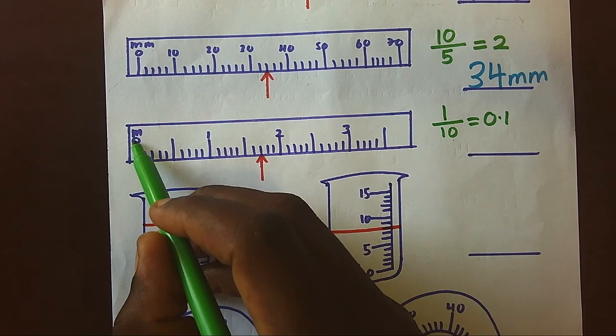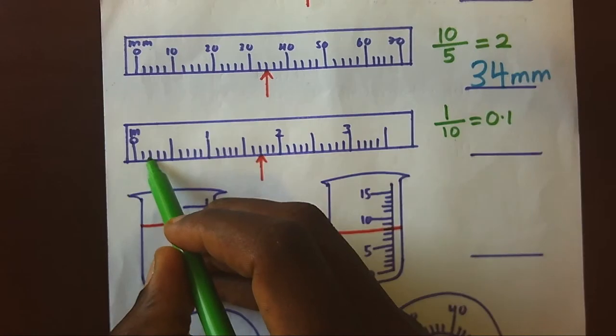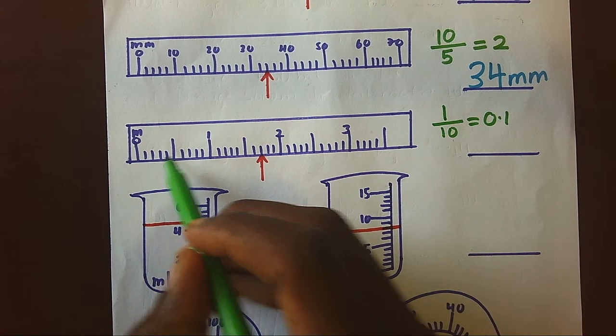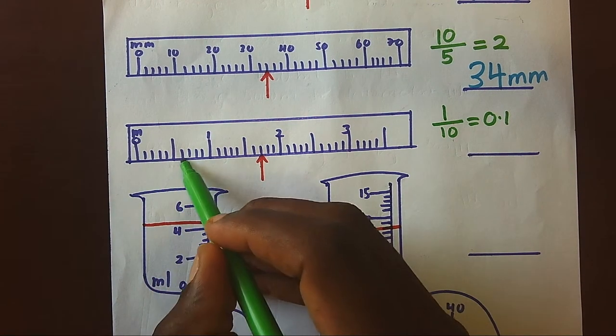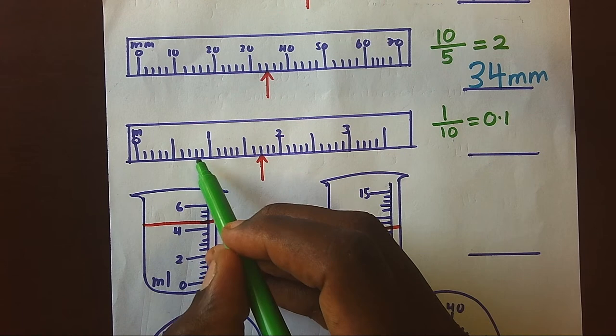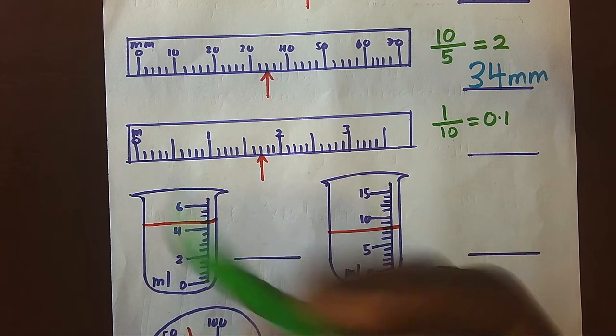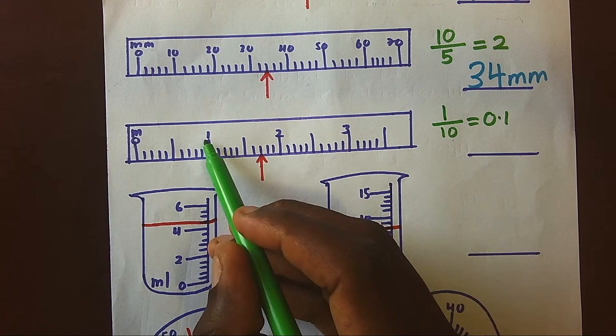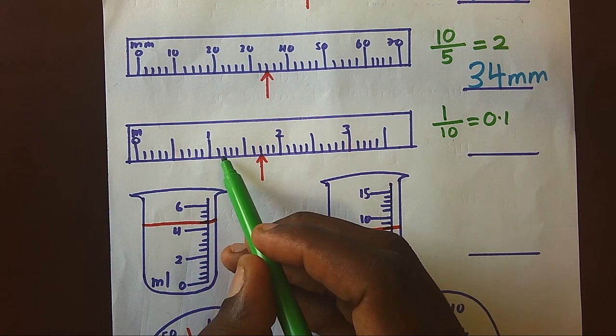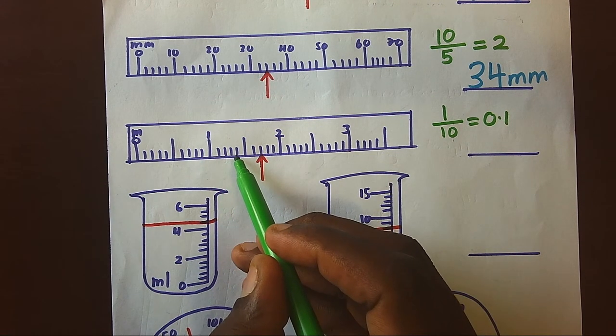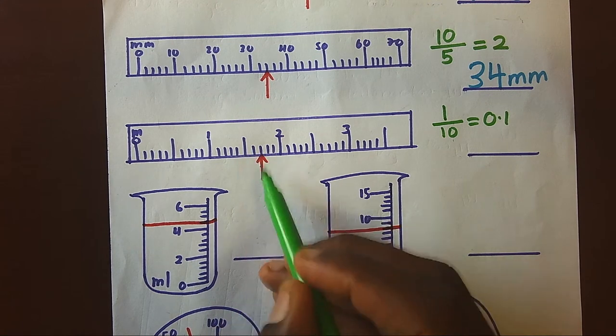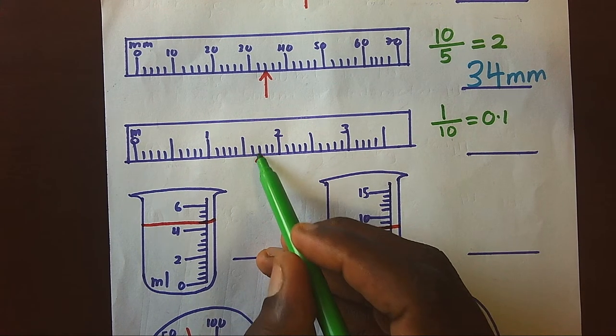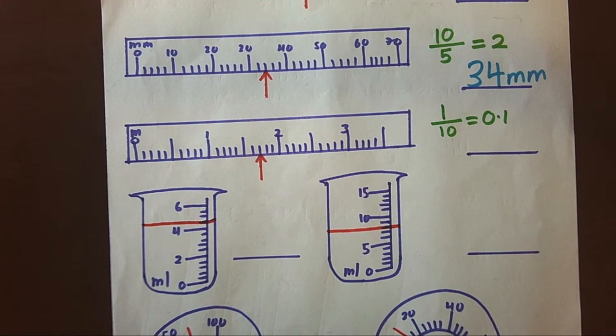Meaning zero, 0.1, 0.2, 0.3, 0.4, 0.5, 0.6, 0.7, 0.8, 0.9, and one. Now when you look at our main reading right from one, 1.1, 1.2, 1.3, 1.4, 1.5, 1.6, then 1.7 will be our main reading.